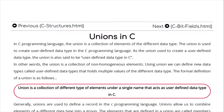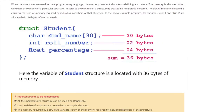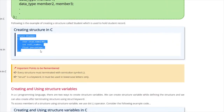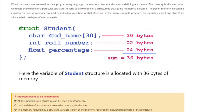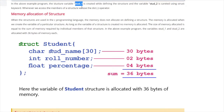In the structure, memory allocation works like this: if I create a structure of student — struct student, char stud_name[30], int roll_number, float percentage — when I declare a structure variable 'stud1', memory is allocated as follows: char stud_name takes 30 bytes because each character stores one byte. int roll_number takes 2 bytes for 16-bit architecture, or 4 bytes otherwise. float percentage takes 4 bytes.